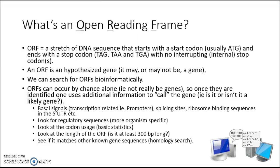We look for splicing sites, which is true in eukaryotic genes only. We look for ribosome binding sequences, which are always found in the five-prime untranslated region of gene sequences. We can look for regulatory sequences, which tend to be pretty organism-specific. We can look for codon usage and collect basic statistics to see if the codon usage patterns fit what would be expected for the kind of organism we're studying. We also look at the length of the open reading frame — if it's smaller than 300 base pairs, that tends to be suspect, because most genes are longer than 300 base pairs in either prokaryotes or eukaryotes. We can also do homology searching to see if our ORF matches other known gene sequences in accessible databases.